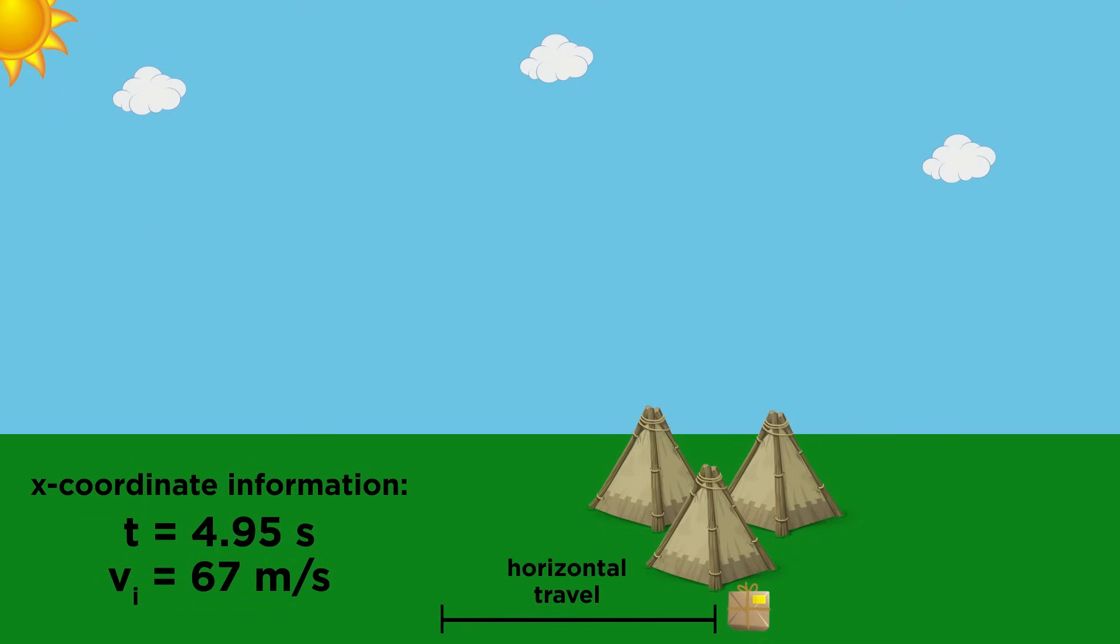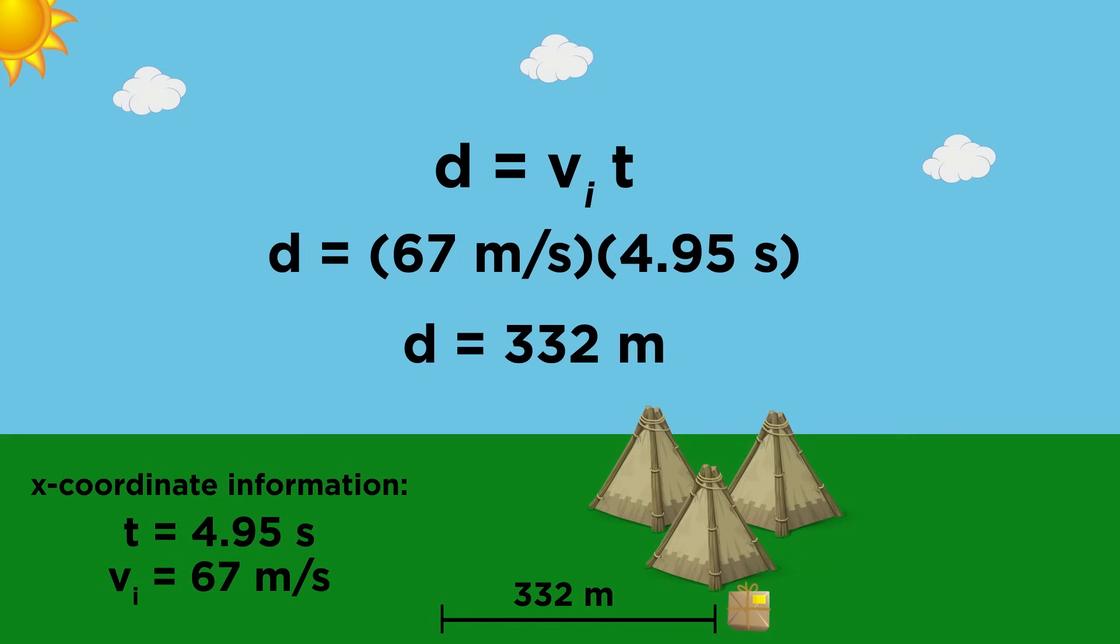Now that we know how long the package is in the air, it is a trivial matter to calculate how far it will travel in the horizontal direction. We simply use the definition of displacement. It is traveling with the same velocity as the helicopter the entire time it is in the air, since there is no acceleration operating in the horizontal direction. So 67 meters per second times 4.95 seconds equals about 332 meters.